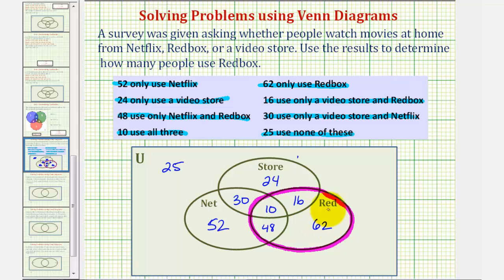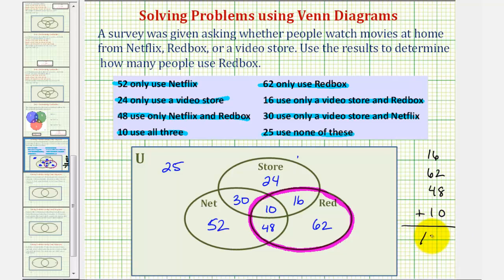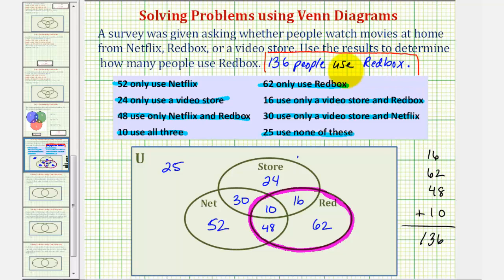The total number of people in the Redbox set would be 16 plus 62 plus 48 plus 10, which equals 136. Therefore, 136 people use Redbox. I hope you found this helpful.